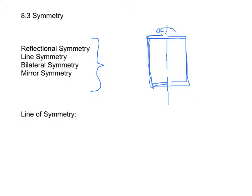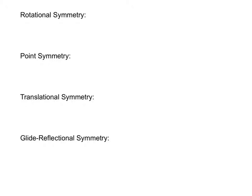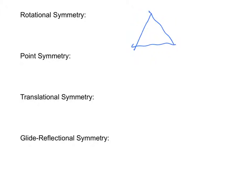A figure can have more than one line of symmetry — for example, a rectangle also has a line of symmetry going the other way. A figure has rotational symmetry if it can be rotated about a point such that its rotated image coincides with the original after turning less than 360 degrees. For example, an equilateral triangle looks exactly the same after rotating 120 degrees.